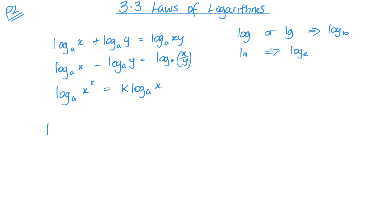Now in terms of special cases — ones that are very useful — if I get one over a value in my log, then this can become a negative version of that same log. It could also be written as that value to the minus one if it stays as positive. You can see that's where this comes from, and this can also come from the power rule. So there are a few ways of getting it.